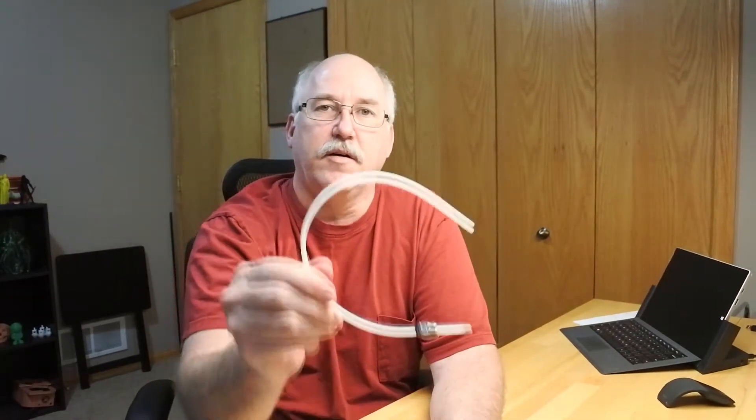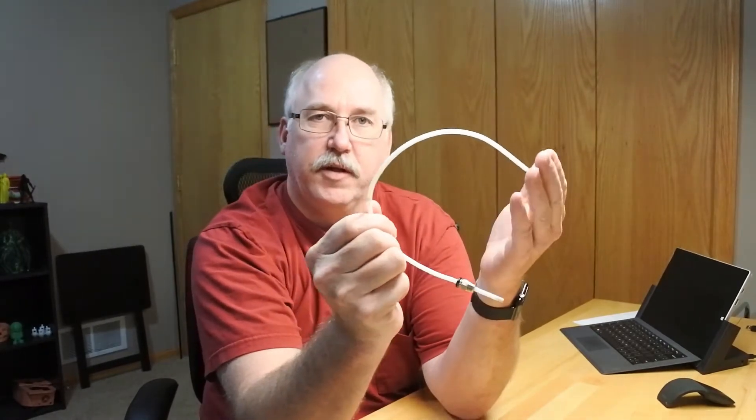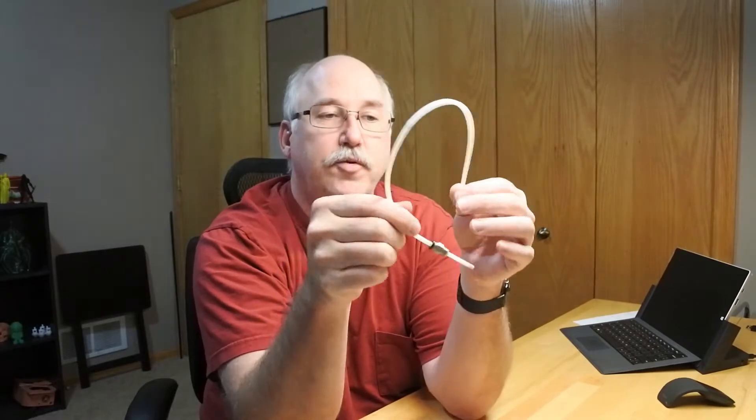These are, we all know, Tronxy, CR10, they're all Bowden style printers and the idea is that the filament is going from the extruder down to the hot end to a tube. And a few things on the tubes are, first off, the high temp portion.